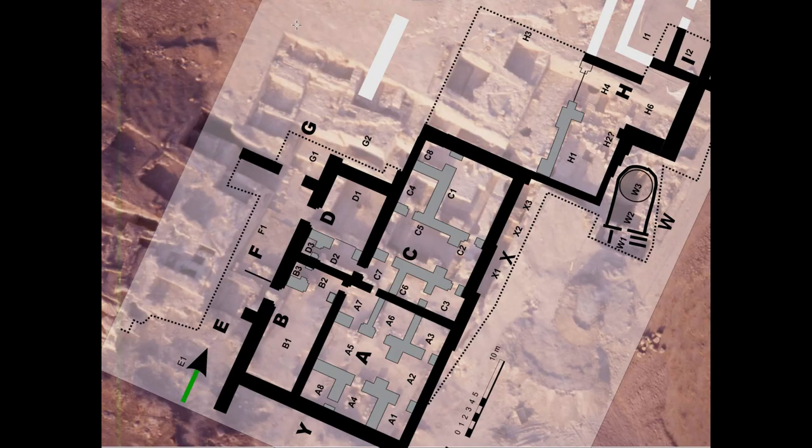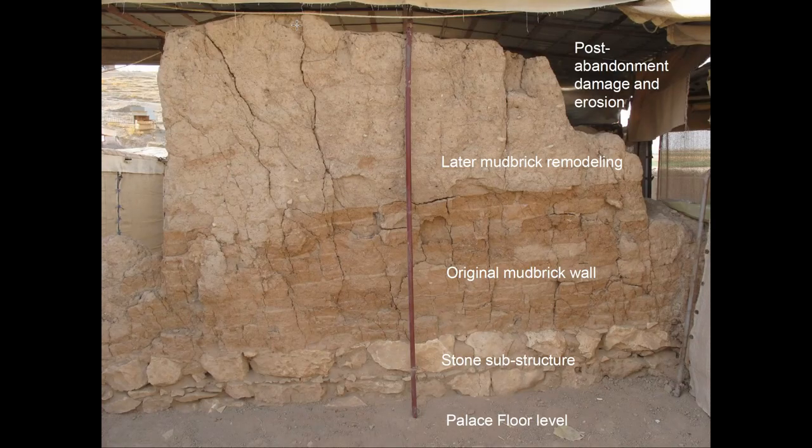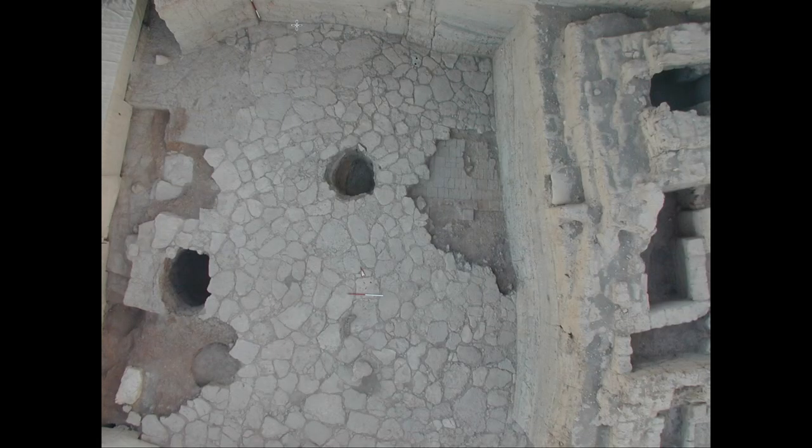Here is a plan overlaid, and here's the plan on its own. You can see the symmetrical elements in the construction plan. The palace walls are constructed of stone and unbaked mud brick in two phases. Stone is also used in the formal courtyard, here in the center of the slide.